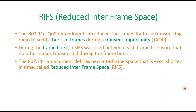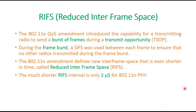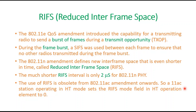The 802.11e amendment defines a new interframe space that is even shorter in time, called Reduced Interframe Space — RIFS. This is much shorter, with an interval of 2 microseconds for 802.11n. Note that the use of RIFS is considered obsolete from the 802.11ac amendment onwards.